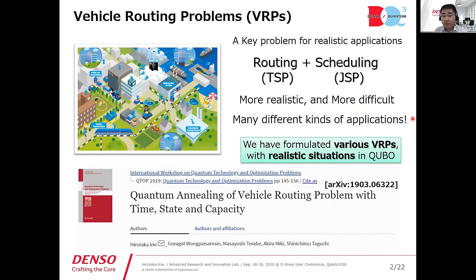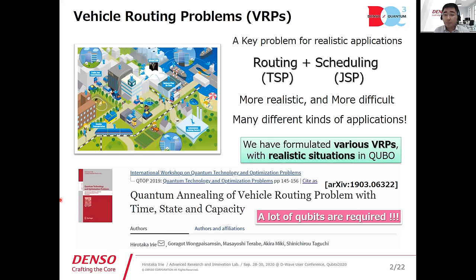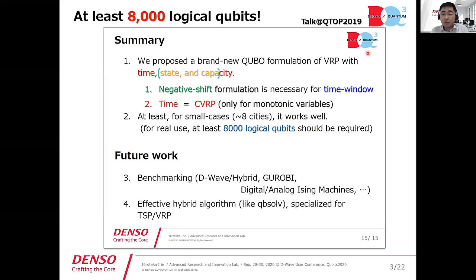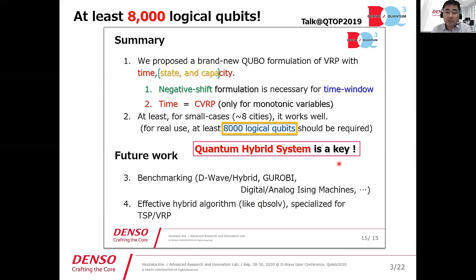We have already formulated various VRP with realistic situations, which includes a description of time, state, and capacity. But this formulation has some issues because it consumes a lot of qubits. We need at least 8,000 logical qubits in this formulation. That was presented at a workshop called QTOP last year. That's why we are interested in the quantum hybrid system, which is related to today's talk.